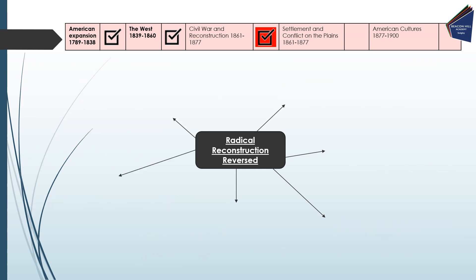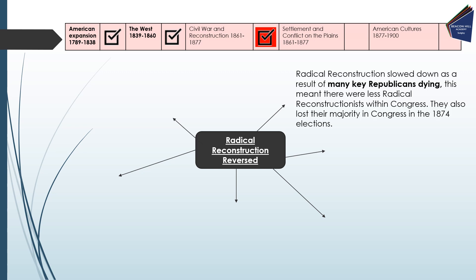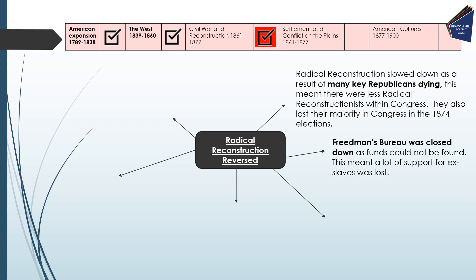The final phase of Reconstruction is where all of that Radical Reconstruction progress was reversed — the roller coaster goes back down. Radical Reconstruction slowed as many key Republicans were dying, meaning fewer radical Reconstructionists in Congress to have their voices heard. The Republicans lost their majority in Congress in the 1874 elections, giving more Democrats — who were pro-Southern — more say in racial policy. As a result, the Freedmen's Bureau was closed down as funds could not be found, and much of the support for ex-slaves was lost.